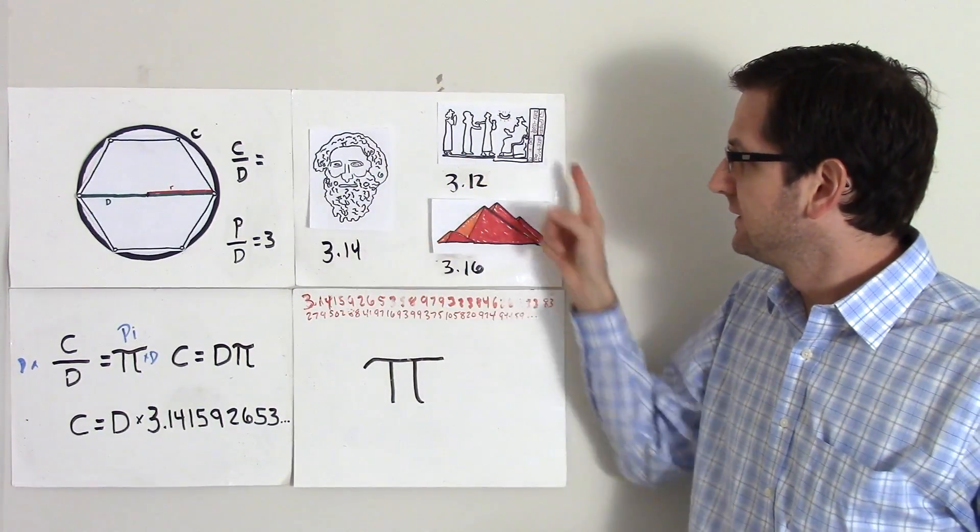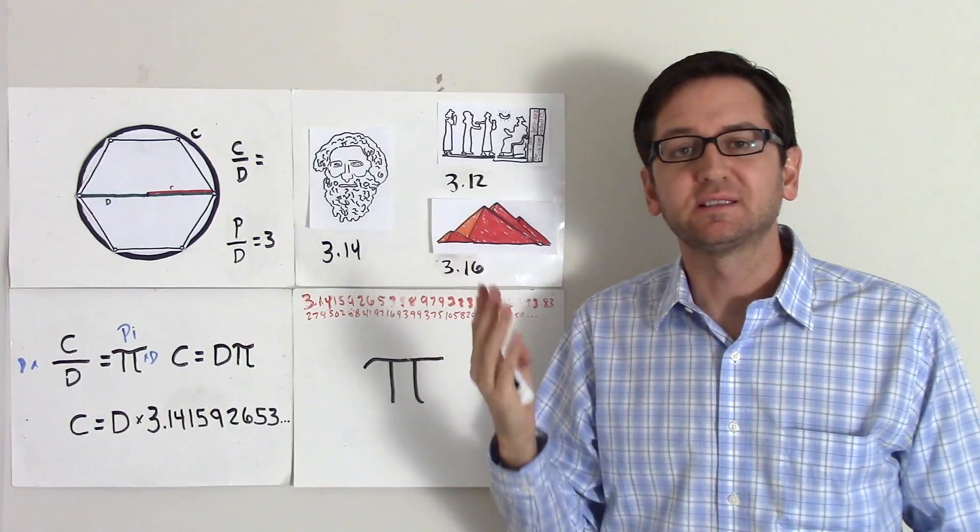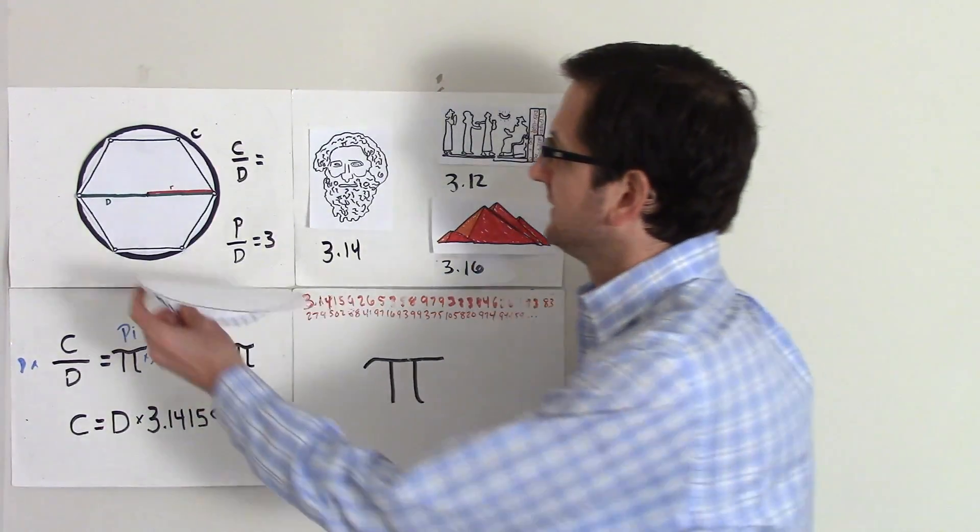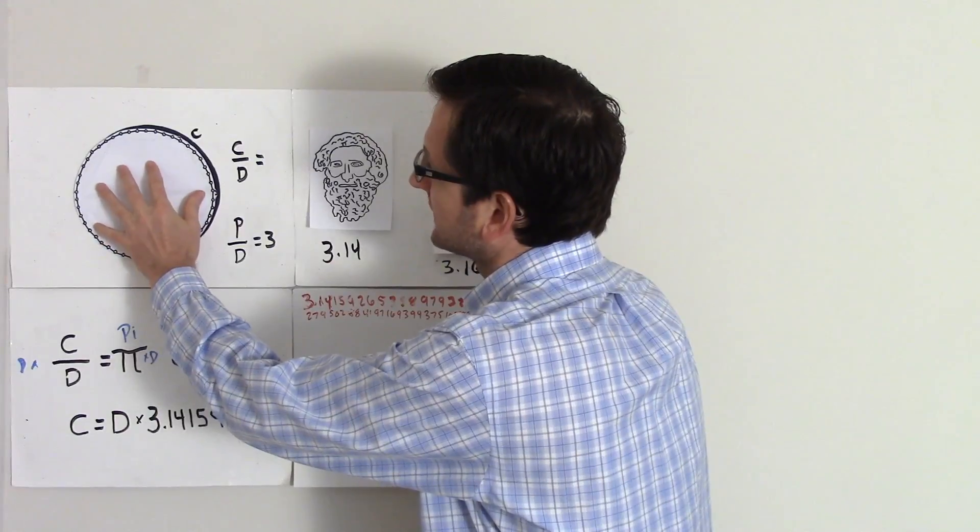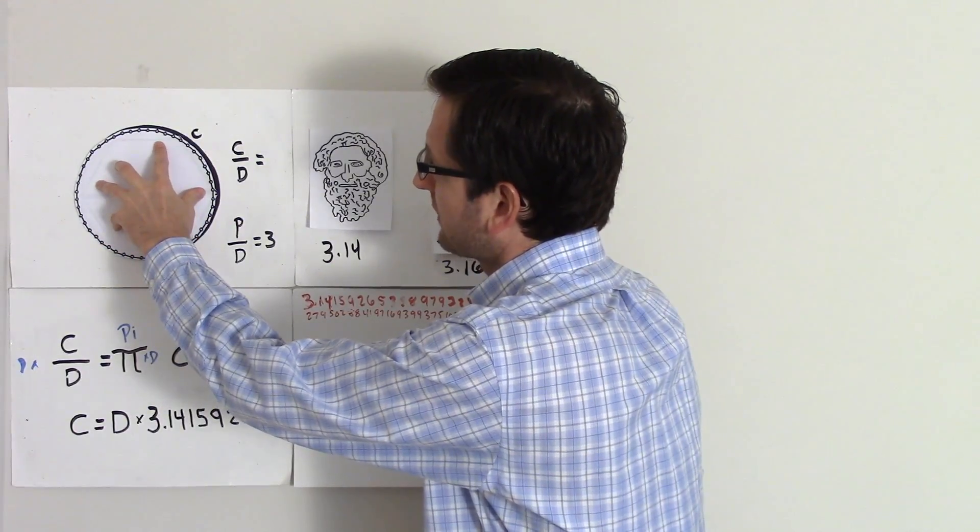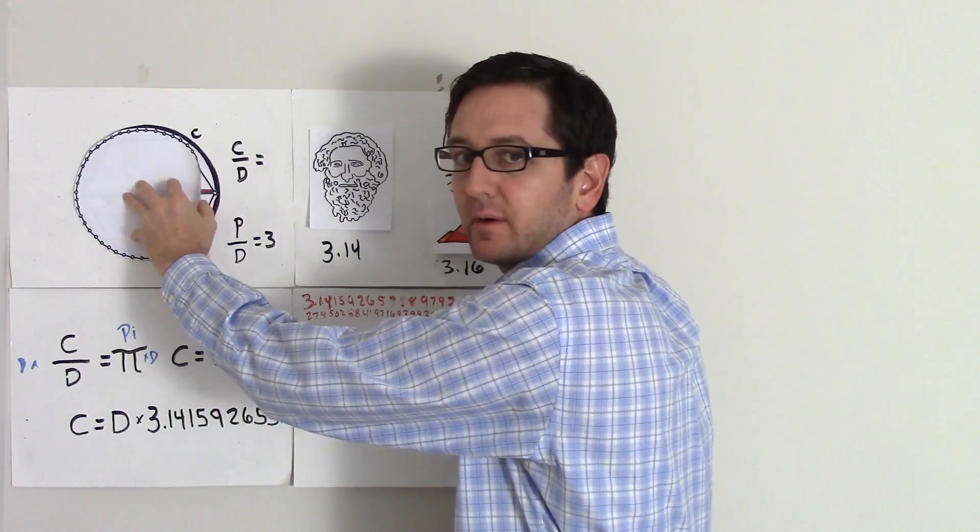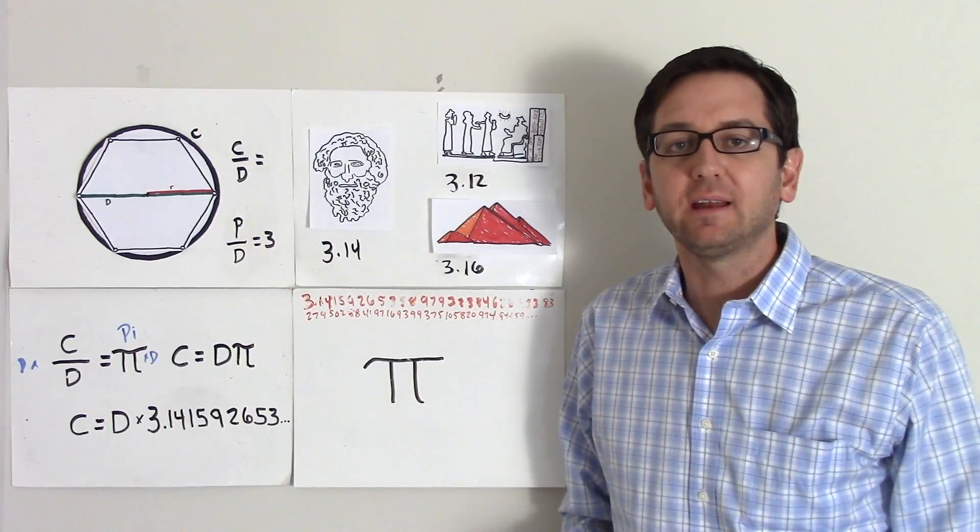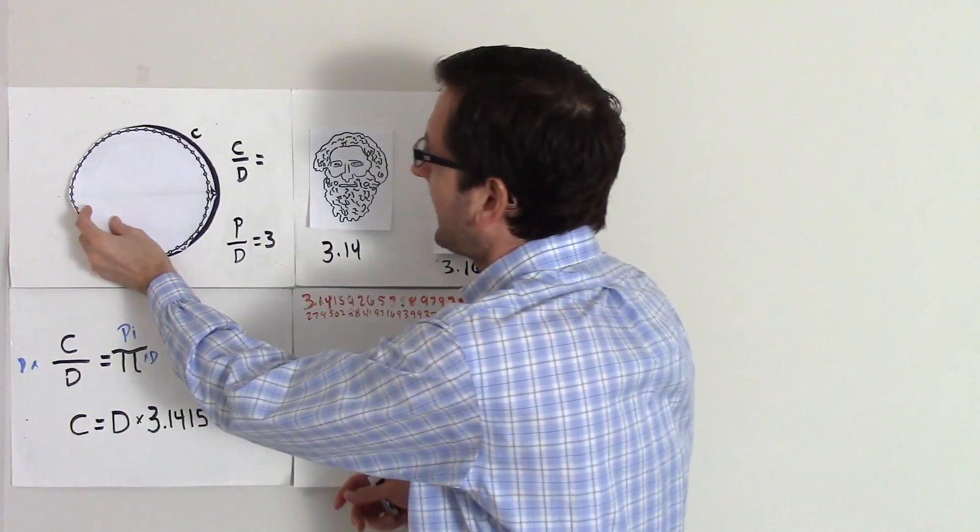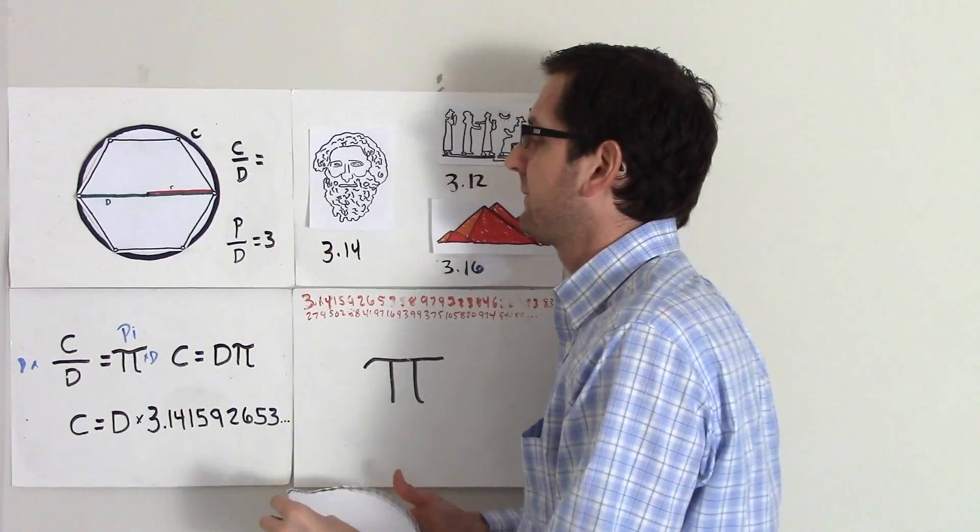Now, what they were not able to do was to conceptualize the fact that just adding more sides to a regular polygon would never get you to the end, would never make it line up fully with circumference.